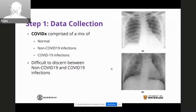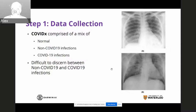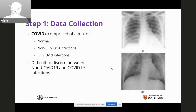The COVIDX dataset is comprised of a mix of normal cases — non-COVID and non-pneumonia infections — then non-COVID-19 infections, which could be viral, fungal, or bacterial pneumonia, and finally COVID-19 infections. It's actually quite difficult to discern between non-COVID-19 and COVID-19 infections on chest X-rays — that's one of the key bottlenecks. That's where AI, machine learning, and deep learning really shine to identify the subtleties that differentiate them to help clinicians better determine the condition.